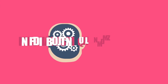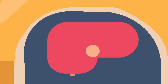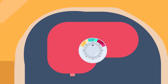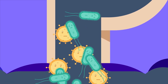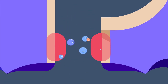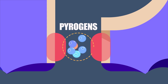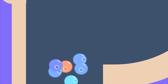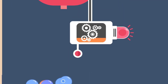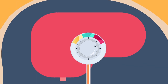Body temperature is usually set to its normal range by the hypothalamus, which acts as a sort of thermostat. When the body suffers from certain pathological processes, namely inflammation, certain chemicals are released by the body, collectively called pyrogens, one of which is interleukin-2. Pyrogens set the thermoregulatory point of the hypothalamus to a higher temperature, thus resulting in fever.